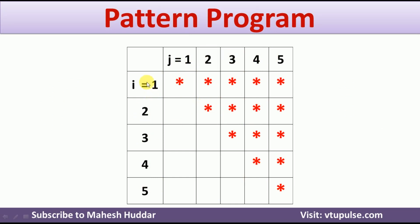Now, to represent these particular rows, I will take one for loop, and to represent these particular columns, I will take one more for loop. i will be the looping variable for the outer loop and j will be the looping variable for the inner loop in this case.